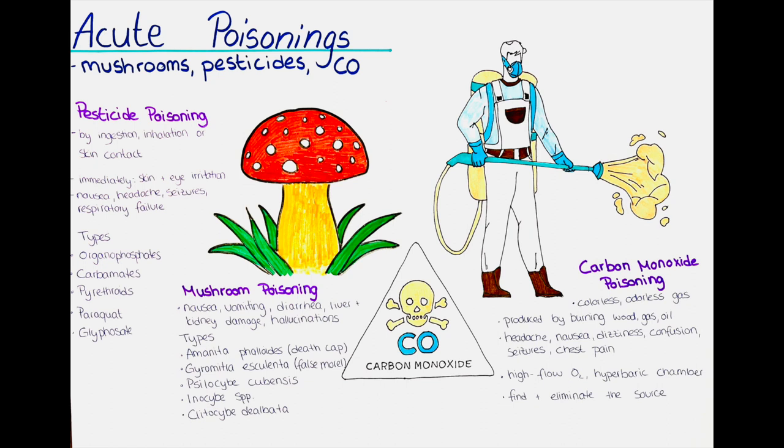Second, carbamates. Carbamate pesticides are used to control insects and pests in crops and gardens. They can cause acute poisoning through inhalation, ingestion or skin absorption. Symptoms of carbamate poisoning include nausea, vomiting, diarrhea, headaches, muscle weakness and respiratory failure.